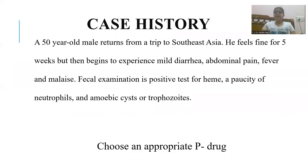The case history is: a 50-year-old male returns from a trip to Southeast Asia. He feels fine for five weeks but then begins to experience mild diarrhea, abdominal pain, fever, and malaise. Fecal examination is positive for heme, a plasticity of neutrophils, and amoebic cysts or trophozoites.